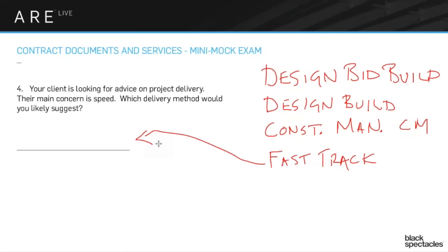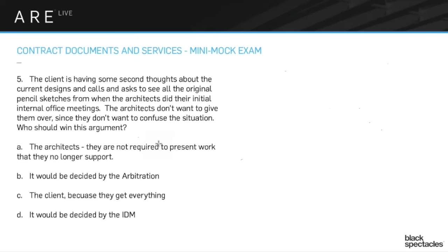Fast track is always more expensive due to adaptations and changes, but that extra expense may be less than the cost savings from finishing earlier. For example, on a very expensive site like Manhattan, spending $500,000 extra in fast track to get the building up and running faster could save more than $500,000 in loan costs. Fast track is not particularly common but shows up on the exam because it's such a particular concept and easy to ask questions about.